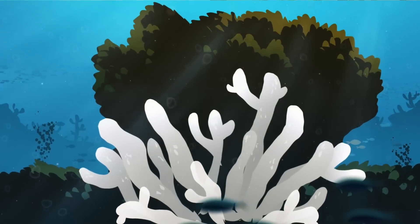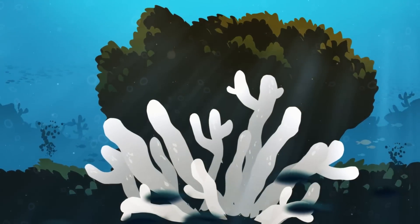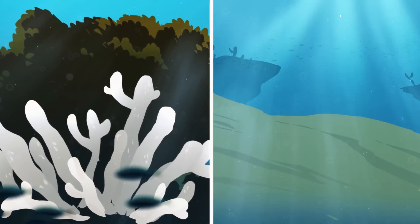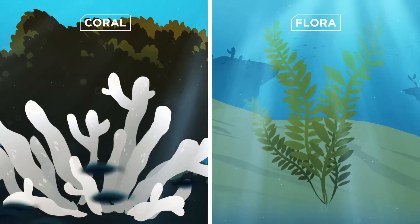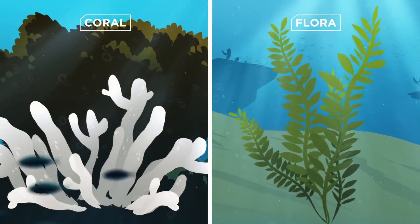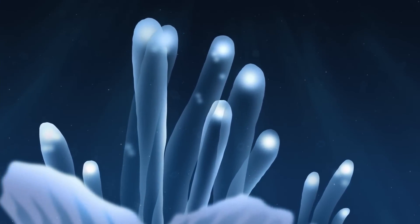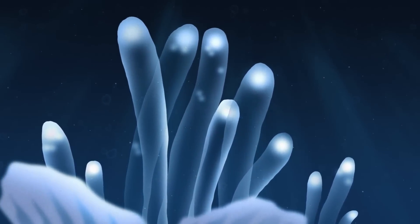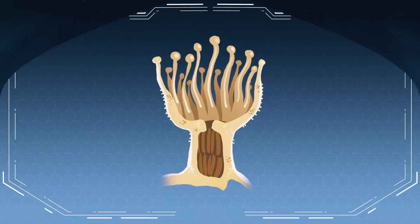Coral reefs are living ecosystems built by hard, colorful coral. Often mistaken as flora, corals are marine invertebrates that grow in tight clusters along the ocean floor. Warm water corals maintain a symbiotic relationship with microscopic algae called zooxanthellae.